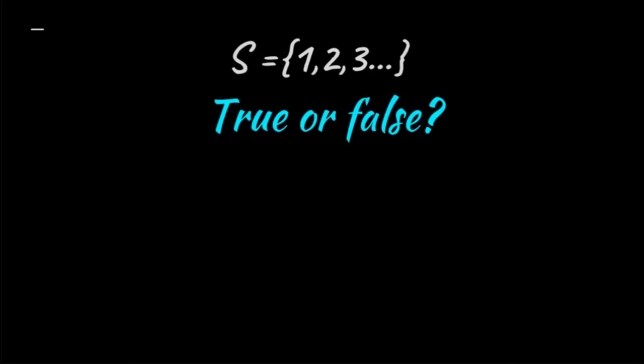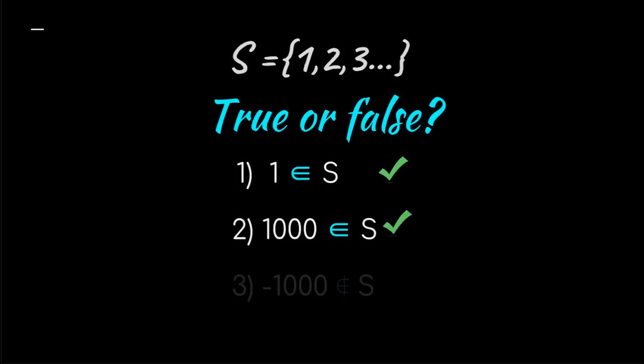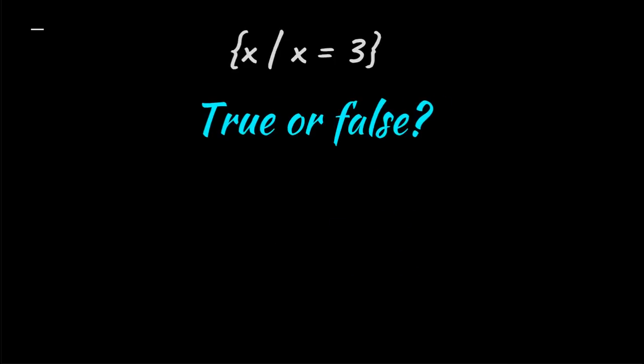S is going to equal the set of all real counting numbers. Tell me, are these statements true or false? One is an element of S. True. One thousand is an element of S. One thousand is a real counting number. That is true. Negative one thousand is not an element of S. That is true as well. X such that X equals three. X plus negative three equals zero. True. Because three plus negative three equals zero. X is less than zero. False. If X equals three, then X must be greater than zero. So this is false. X is greater than two. True. Because three, yes indeed, is greater than two.